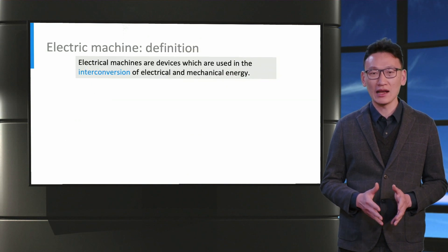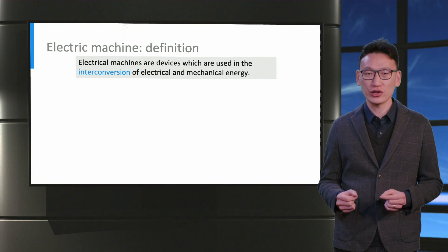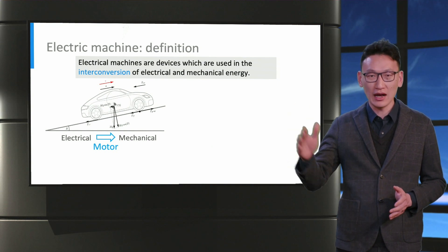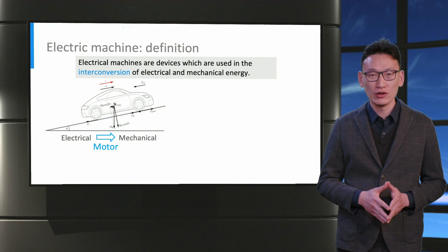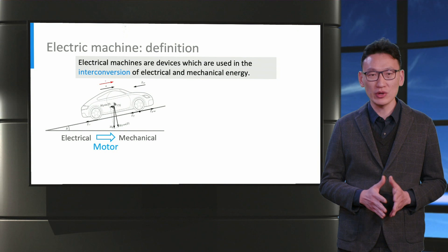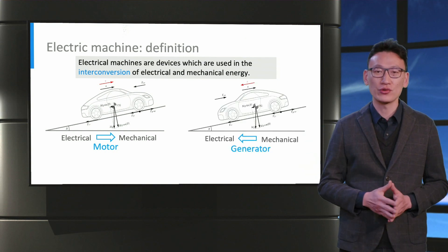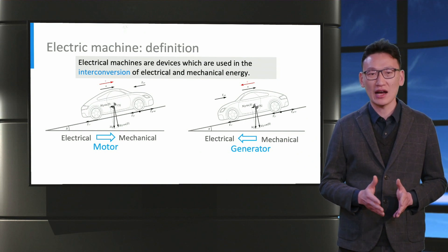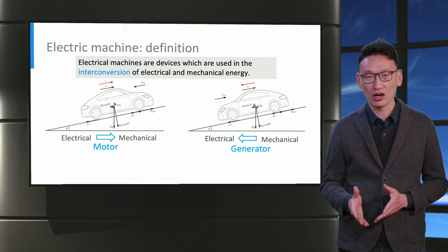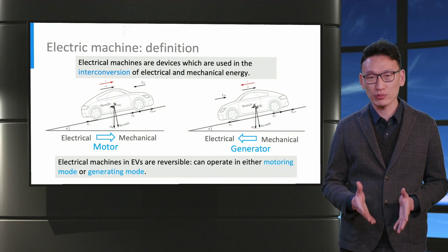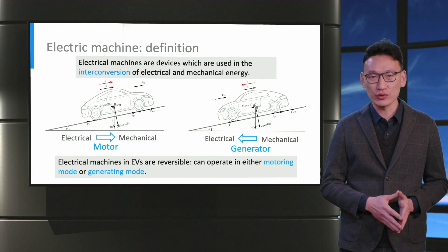What are electrical machines? Electrical machines are devices used for the interconversion of electrical and mechanical energy. If you look at the left image, you can see the EV moving up the slope and different forces acting on the vehicle. For the EV to move up the slope, the electrical machine needs to work as a motor, providing power to the EV. When the EV is coming down the slope, as shown in the right image, the same electric machine will act as a generator, helping the driver limit the speed and recharge the battery. This shows that electric machines in EVs are reversible and can operate in either motoring mode or generating mode.